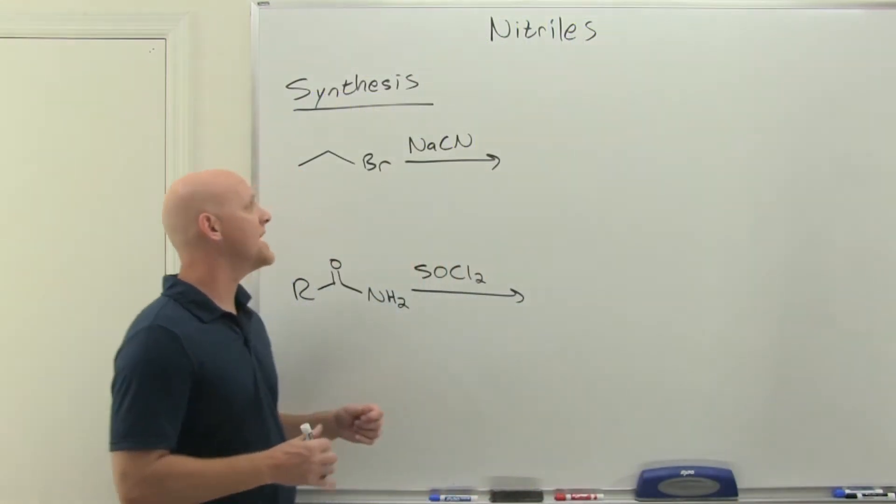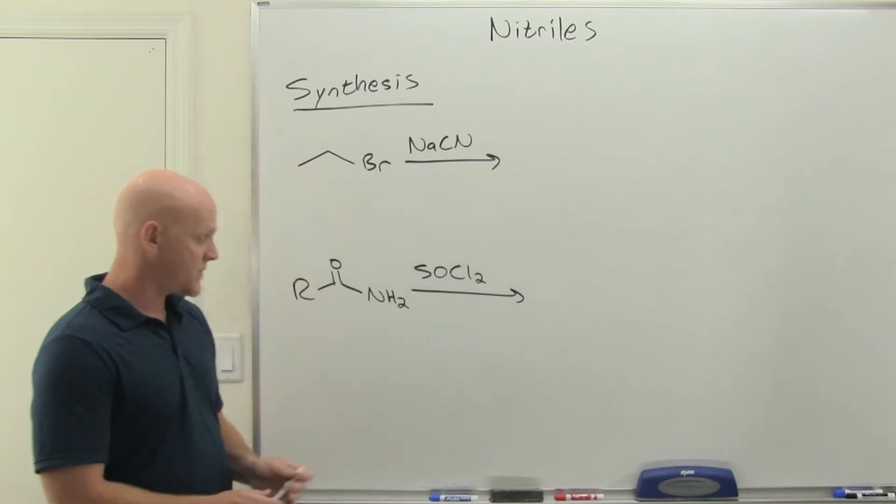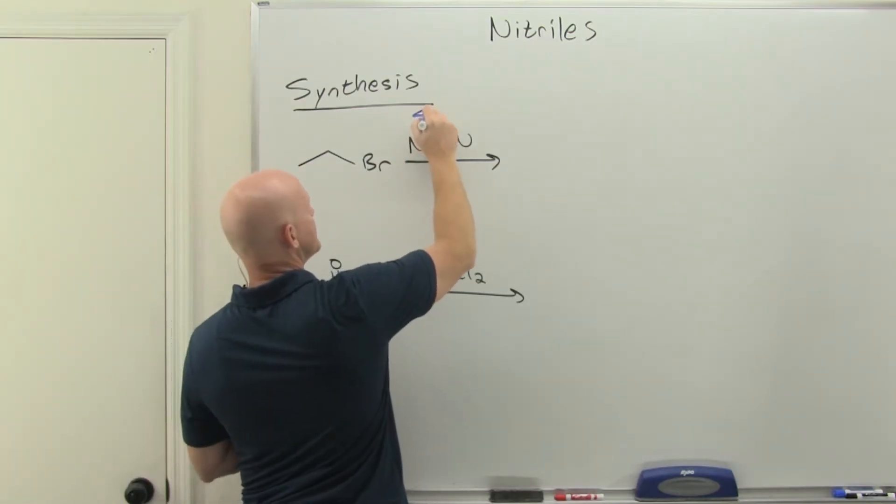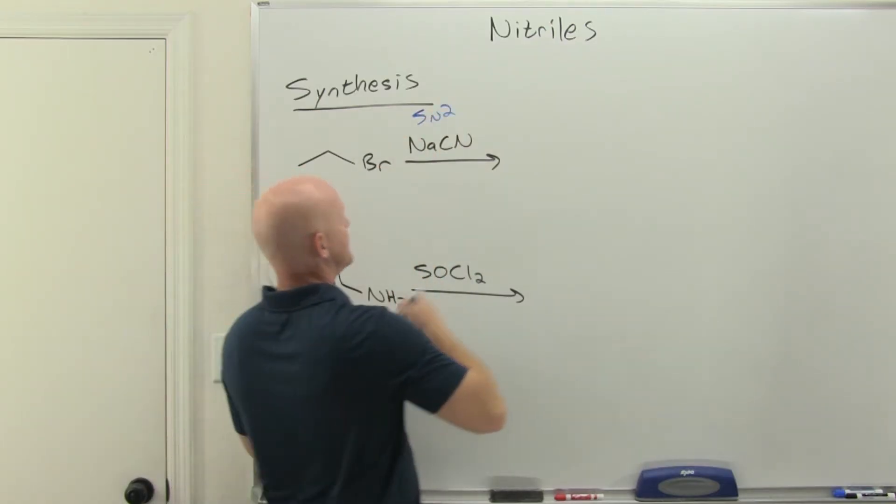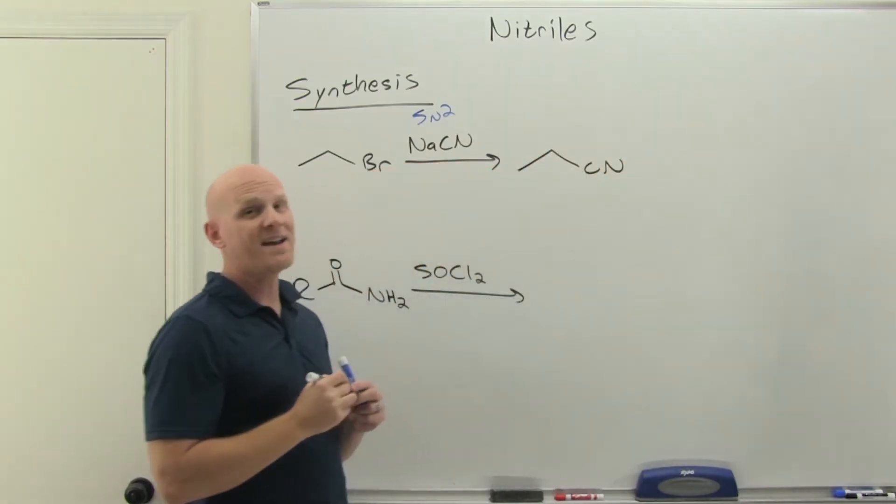Synthesis of nitrile. The first is straight up SN2. We're going to use a nice alkyl halide for SN2, so good backside attack like a primary halide. We're going to use cyanide as our nucleophile and it's just going to come and do backside attack and replace your leaving group with a cyanide ion.